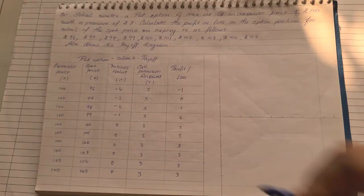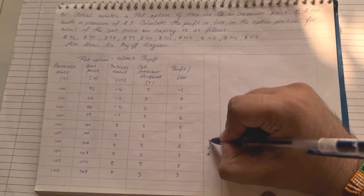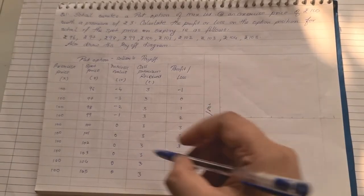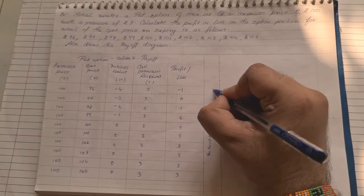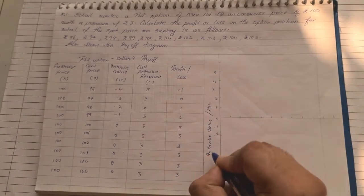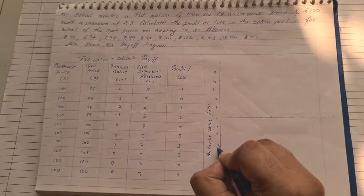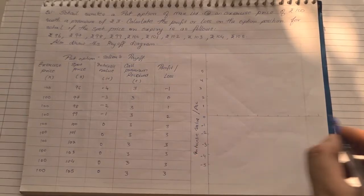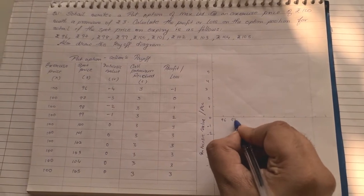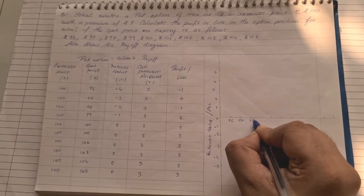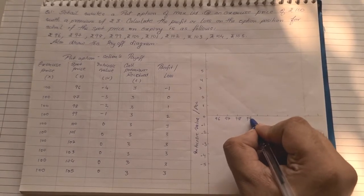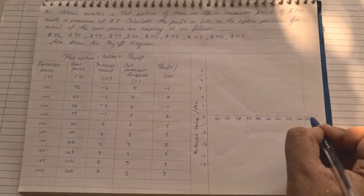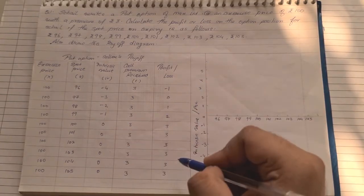Now we will represent the same thing graphically. On the y-axis we will have intrinsic value and profit and loss, starting from 0, with a gap of 1, going down to negative 1 through negative 5. On the x-axis we will note down our spot prices: 96, 97, 98, 99, 100, 101, 102, 103, 104, and 105. Now we will start plotting our intrinsic value and profit and loss on the graph.